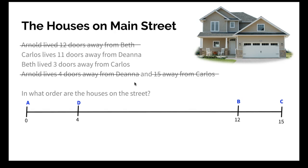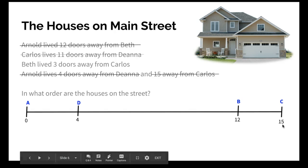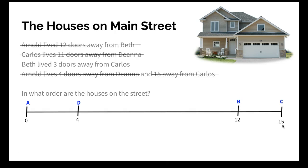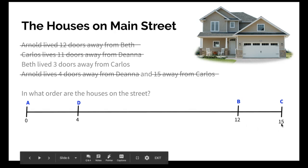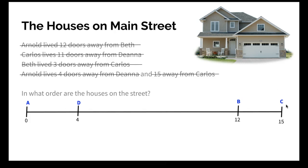I still have two clues left, so I'm just going to make sure the math adds up — otherwise I've done something wrong. Carlos lives 11 doors from Deanna: 4 plus 11 equals 15, where Carlos lives, so that works. Beth lives 3 doors away from Carlos: 12 plus 3 is 15, so that also works. That means the order on the street is Arnold, then Deanna, then Beth, then Carlos, and it gives you a map of exactly where each house is located.